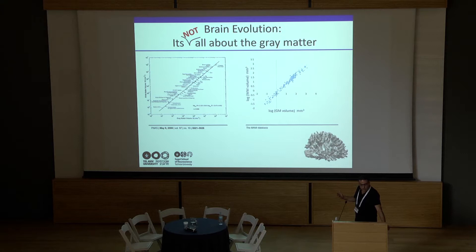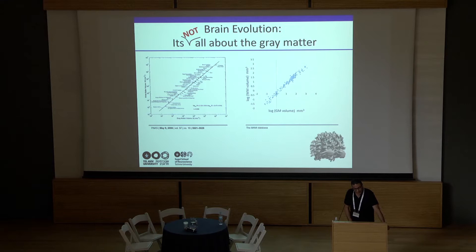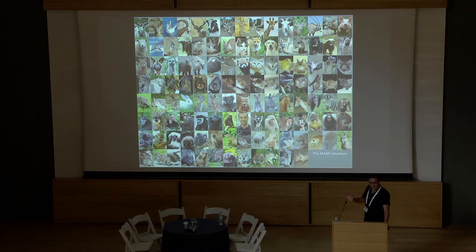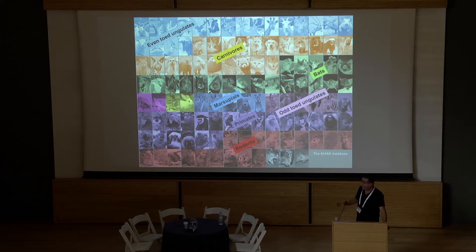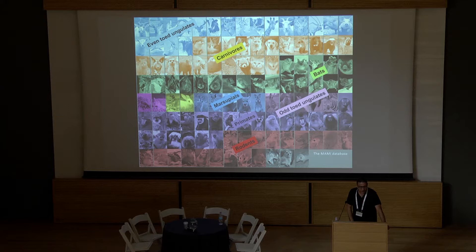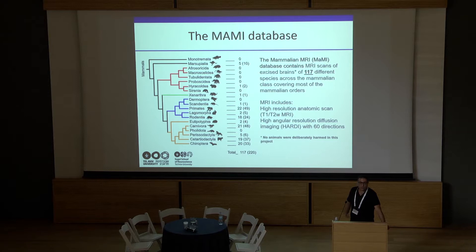This is replicated in our own database called MAMI — Hebrew for 'sweetheart,' but also standing for Mammalian MRI collection. This is a crazy dataset: we have 117 different species, colored by different orders — ungulates, carnivores, primates, and smaller orders. With replicas within species, we currently have 220 brains in the collection, growing on a weekly basis.